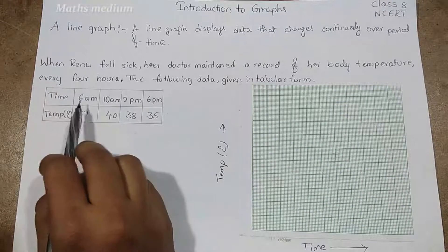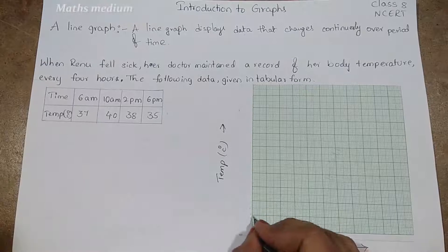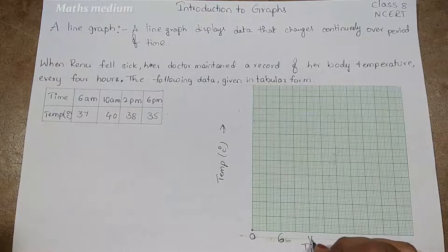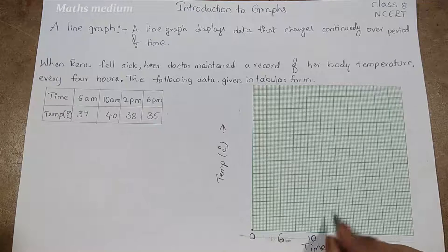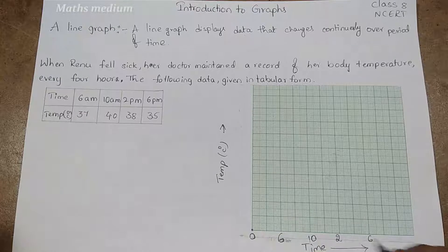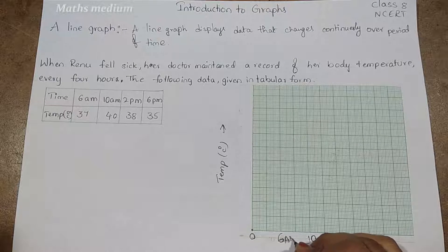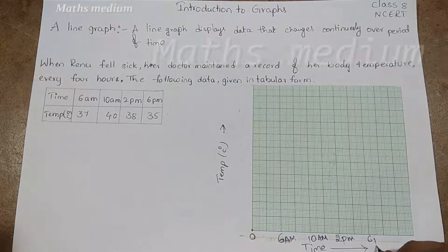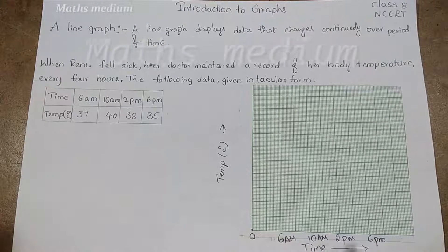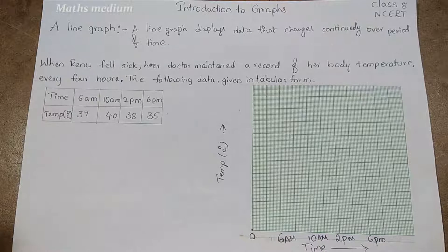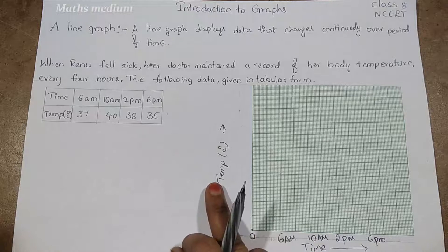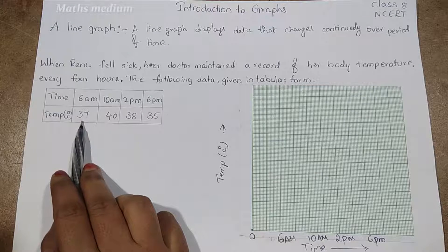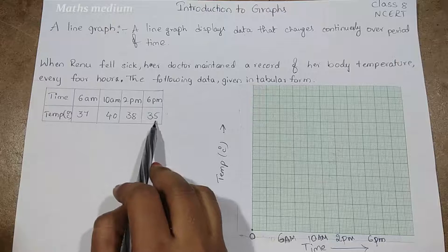I am here taking 0, after 2, 6, 10, 2, and 6. So this is am, and this is also am, this is 2 pm, and this is also 6 pm. These are the timings of every hour body temperature checking times. Now this is the temperature. We have to take according to the data: 37, 40, 38, 35.